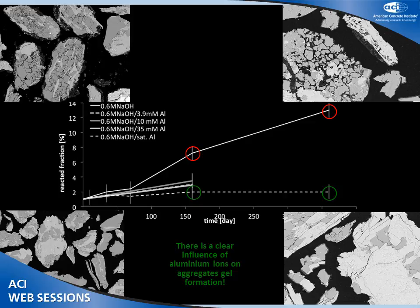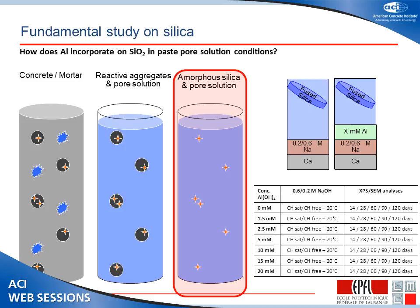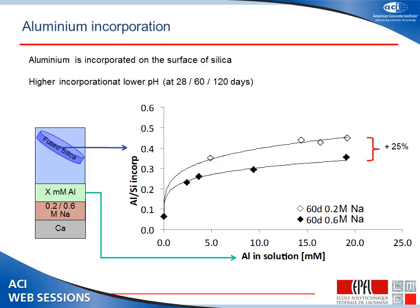The final step was to look at fused silica plates, which allow investigation with sophisticated techniques including photoelectron spectroscopy. We could measure that the amount of alumina absorbed on the surface increased with time, and also that absorption increases when pH is lower. This indicates that in real concrete, there is a conjunction of two effects: first, the reactive silica brings down the pH; by bringing down the pH, we enhance the absorption of alumina on the silica surface, which in turn suppresses the reaction.